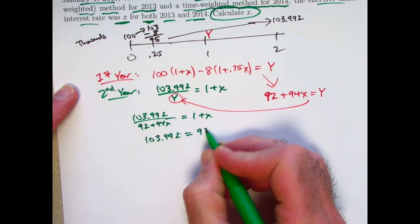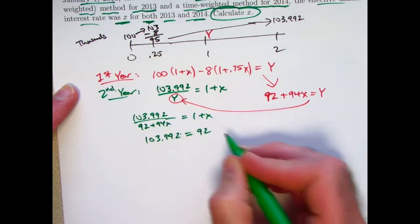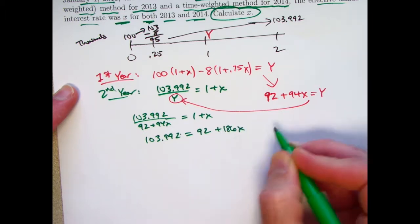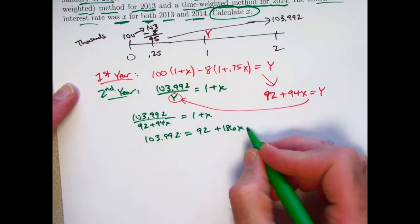103.992 over 92 plus 94x will equal 1 plus x. Multiply both sides by 92 plus 94x. 92 times 1 is 92. 92x plus 94x is going to be 186x. And then plus 94x squared.